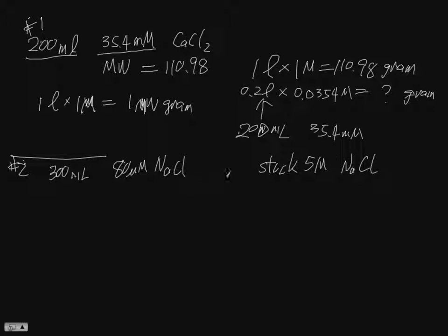It basically asks you how much volume of the stock do you need to make the 300 microliters of 80 micromolar sodium chloride. This will be your V1, this will be C1, this will be C2, this will be V2. So basically that's it, you just need to solve it.